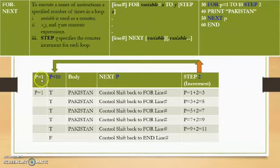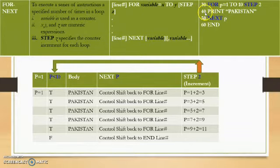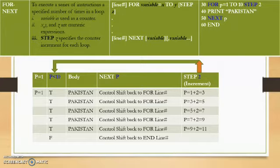This can be understood with a trace table. The counter variable p is initialized at one, then tested for the condition less than 10. Since one is less than 10, the condition is true and the body statement executes, printing 'Pakistan'. At line number 40 we have the print statement. When p equals one, condition is true, body executes, and 'Pakistan' is printed. Control then shifts back to the FOR line.